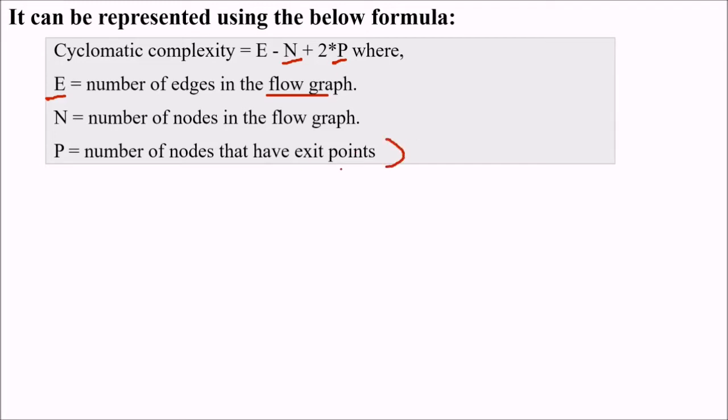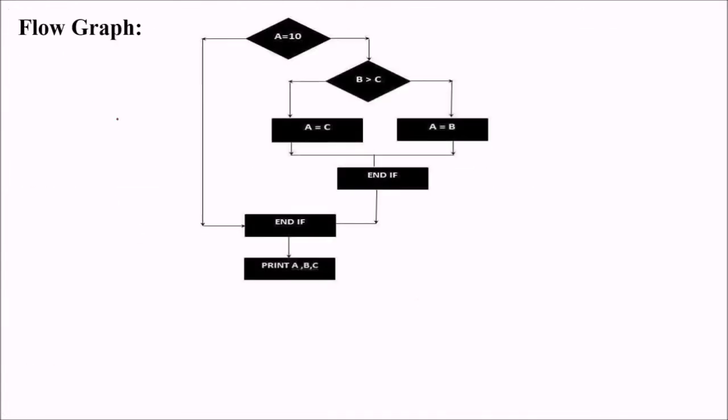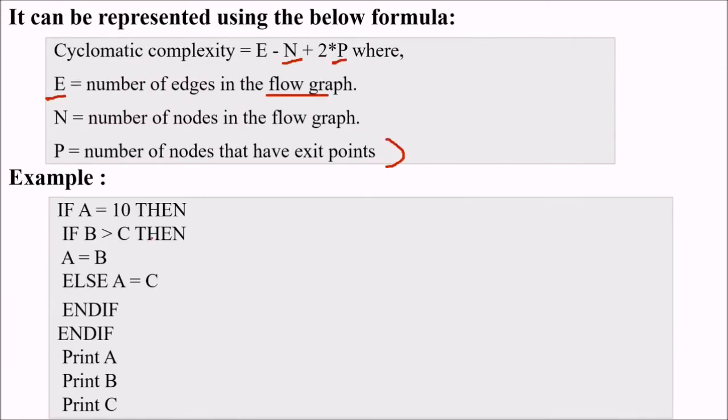For example, if this is a code: if A equal to 10, then if B greater than C, then A equal to B, else A equal to C, end if, end if, print A, print B, print C. In this, we can make the control flow graph like this. If A, then we check A equal to C, A equal to B, and end if, end if, print A, B, C. This is how we can make a simple CFG of this code.